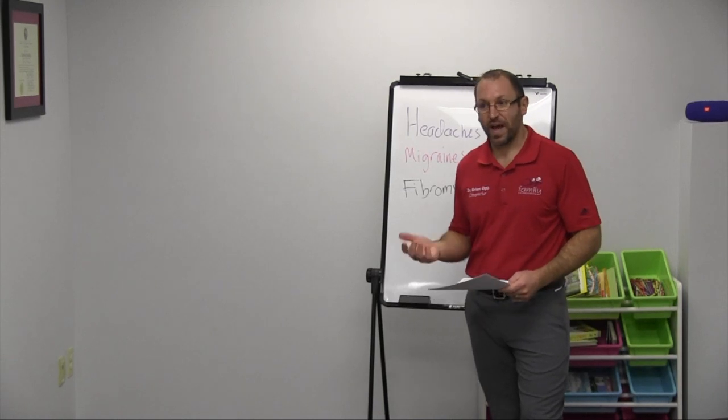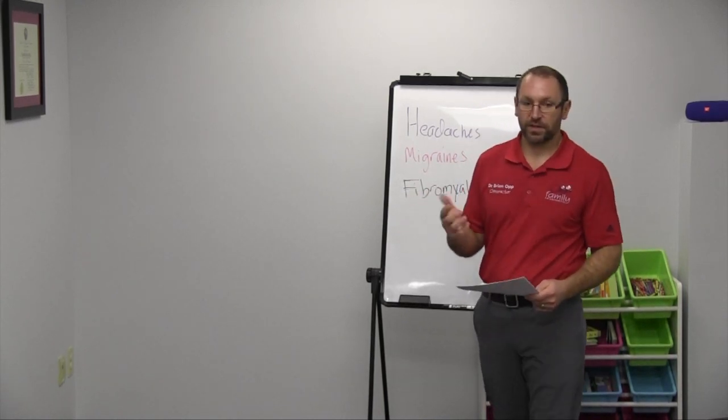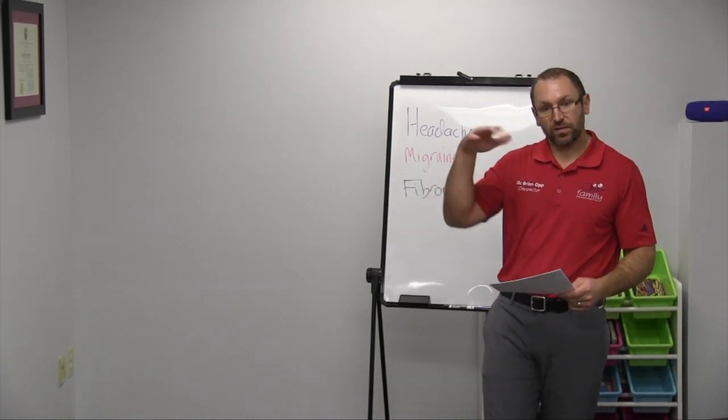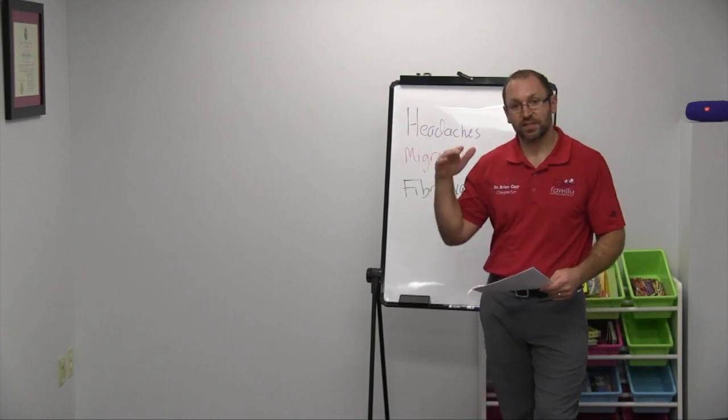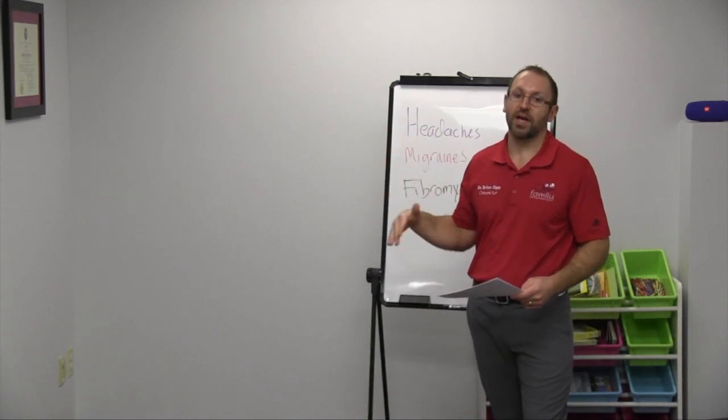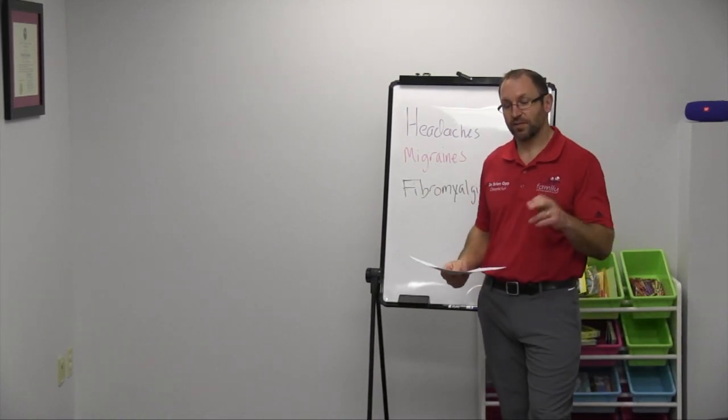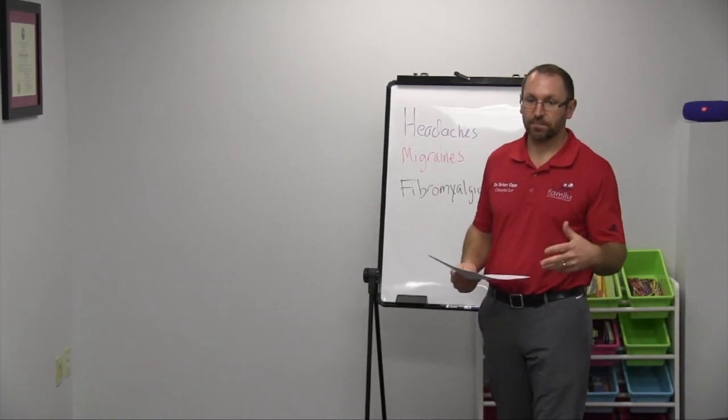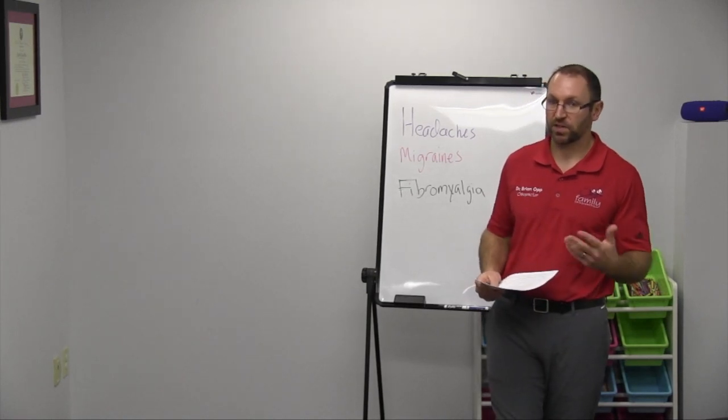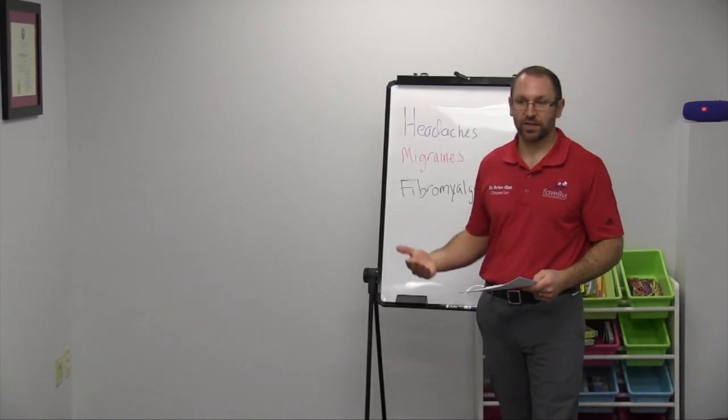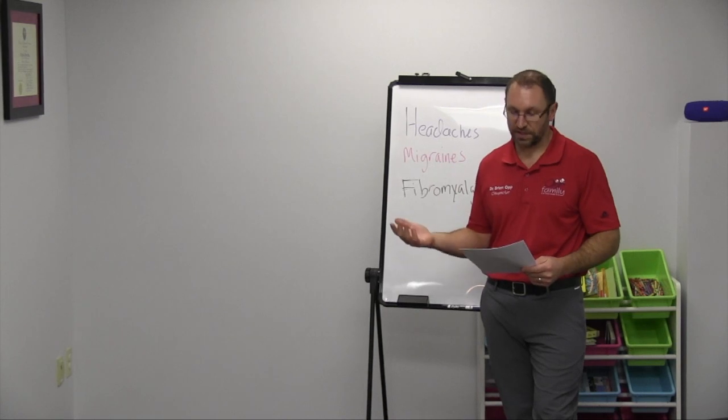Migraines can come with auras or not. So the aura is what they call the dots, the squiggly lines a lot of times that tells somebody that it's going to be coming on, they have to find a dark room, they try to take a medication for it. So those are the people that can sometimes benefit from the medication because they have it. Other ones they'll just hit them like a train and they'll all of a sudden get those headaches.